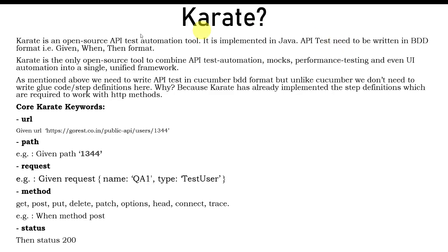API tests need to be written in BDD format — that is Given, When, and Then. What this means is that when you are writing your automation scripts for API automation, you write your syntax and scripts in the feature file using the Given, When, and Then format.